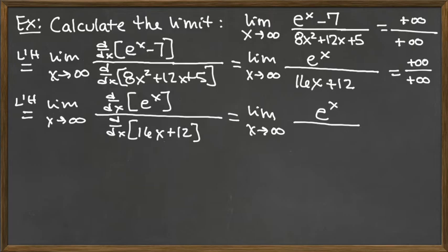So notice we're not in some sense really making progress with the top. We're always going to, if we kept applying L'Hopital's rule, if it was applicable, we are always going to get e to the x. However, look at what's happening on the bottom. We started off with a quadratic, then we had a line, and now we're going to have a constant.